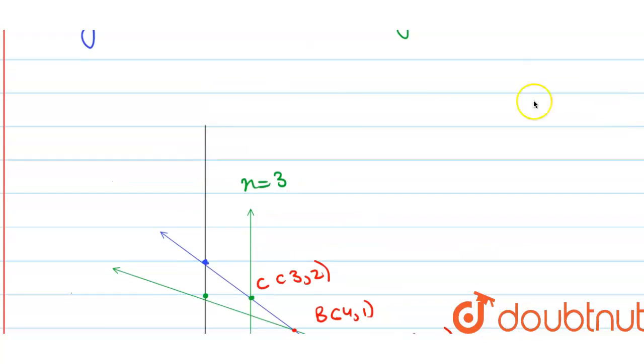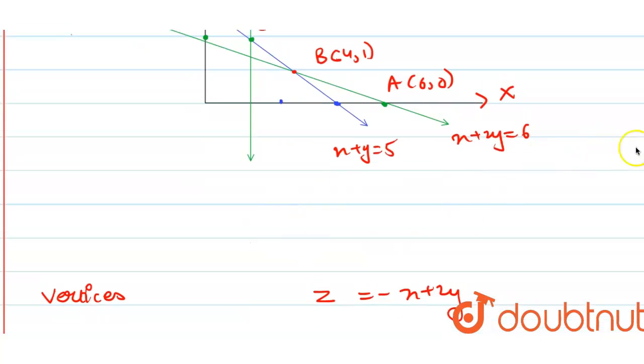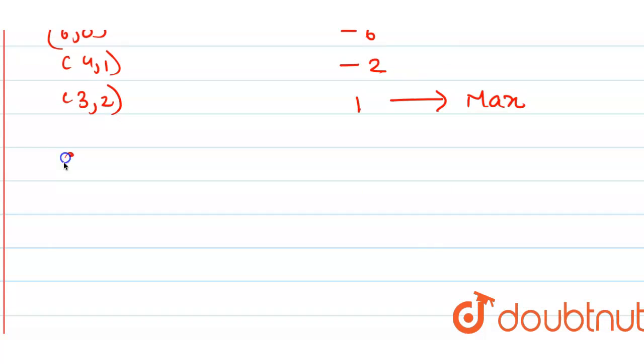This is your x-axis and this is your y-axis. Therefore z has no maximum value as the region is unbounded.